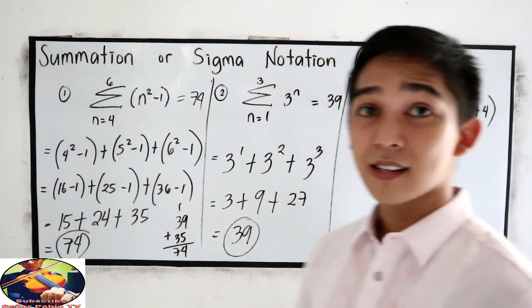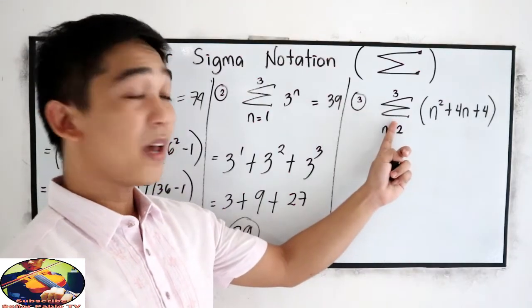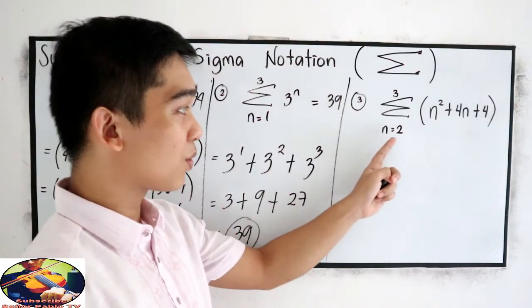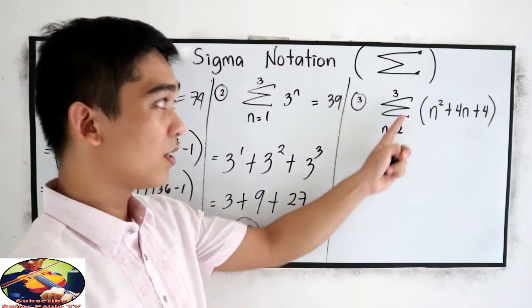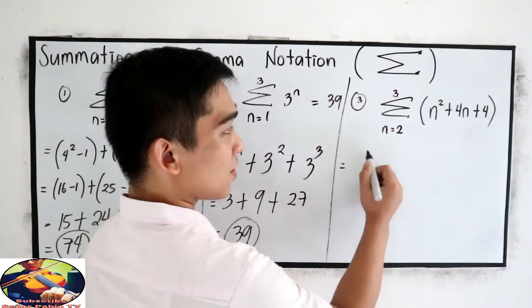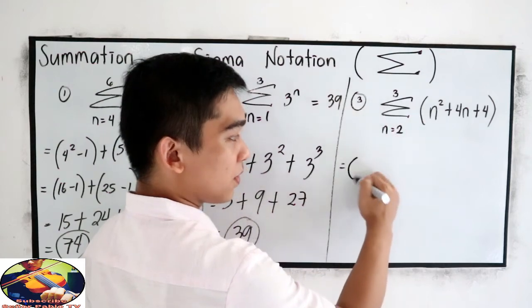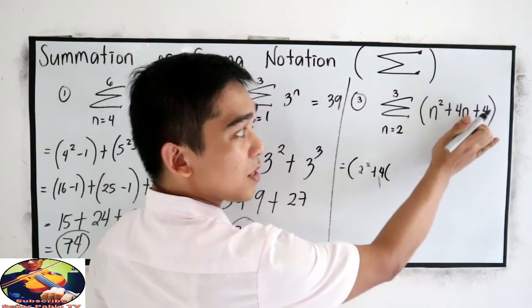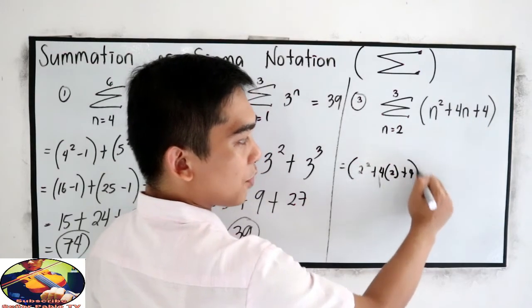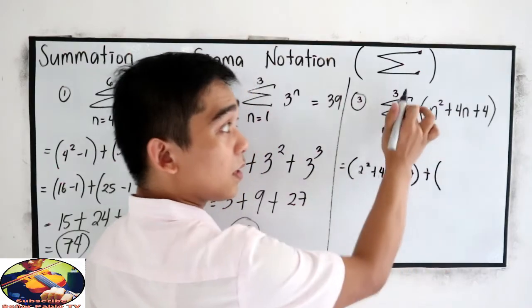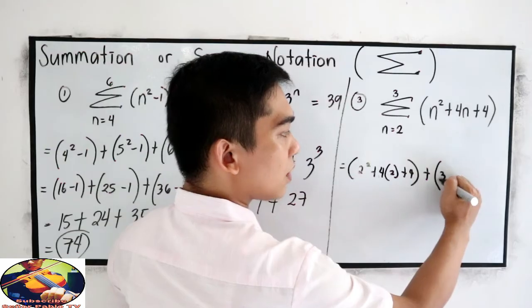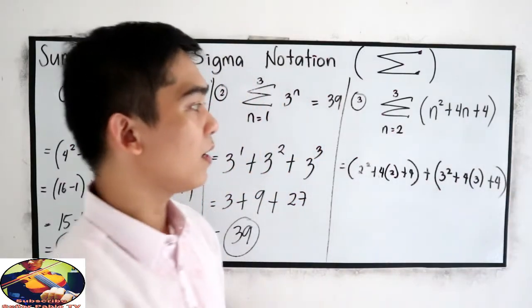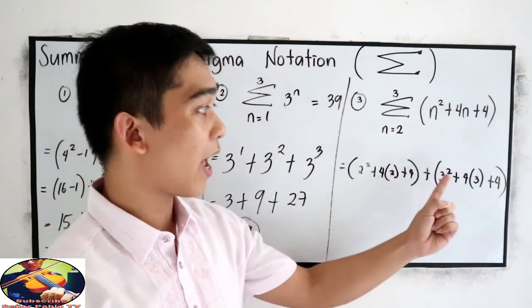And our last example: summation of N squared plus 4N plus 4, from N equals 2 to 3. So let's start with 2. That will give us 2 squared plus 4 times 2, plus 4. Plus 3 squared plus 4 times 3, plus 4. Just change the N to 2 and 3.